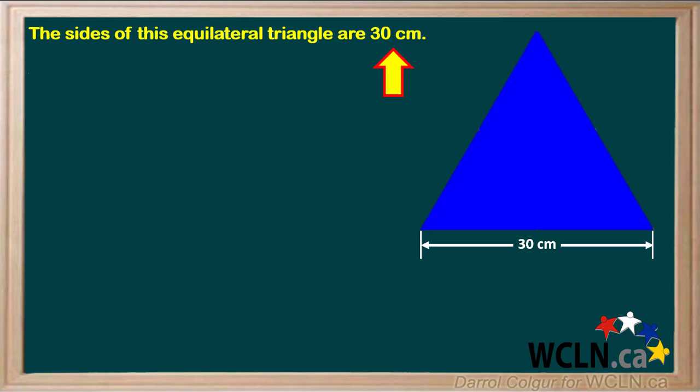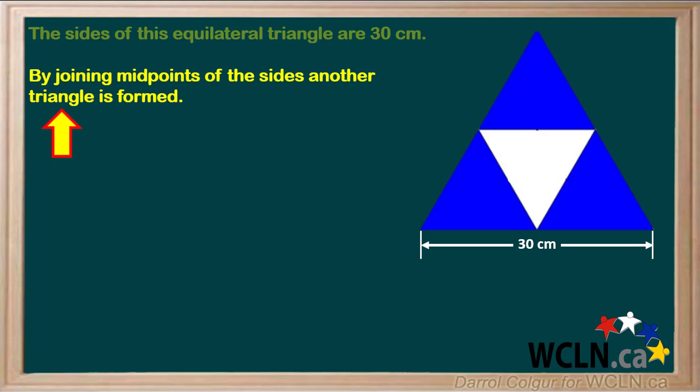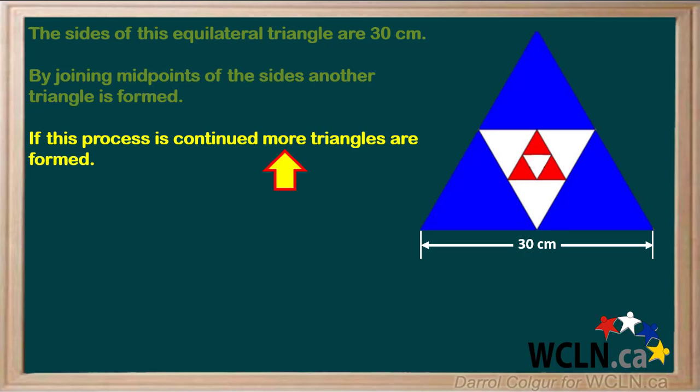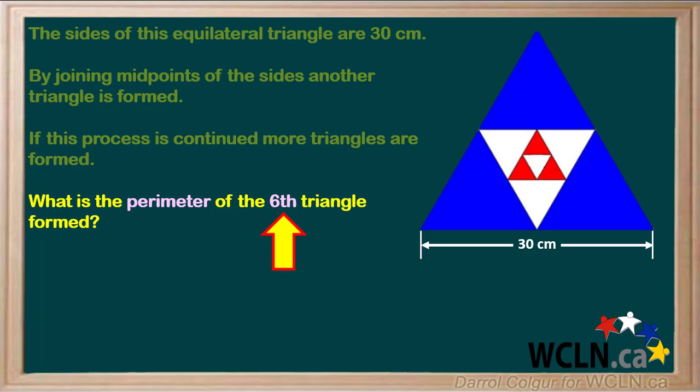We're given that the sides of this blue equilateral triangle are 30 centimeters. By joining the midpoints of the sides, another triangle is formed — the white one in the diagram. If this process is continued, more triangles are formed, each one inside of the previous one. We're asked to find the perimeter of the sixth triangle formed.